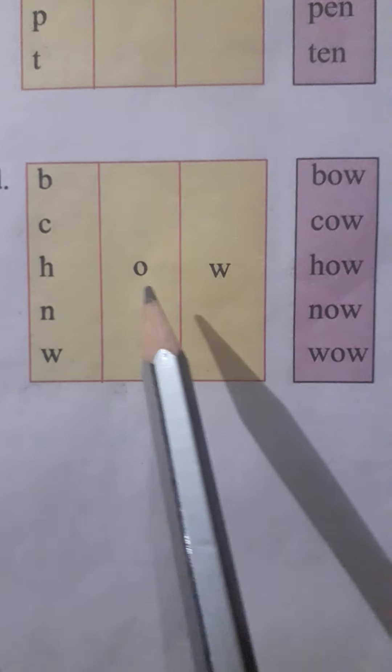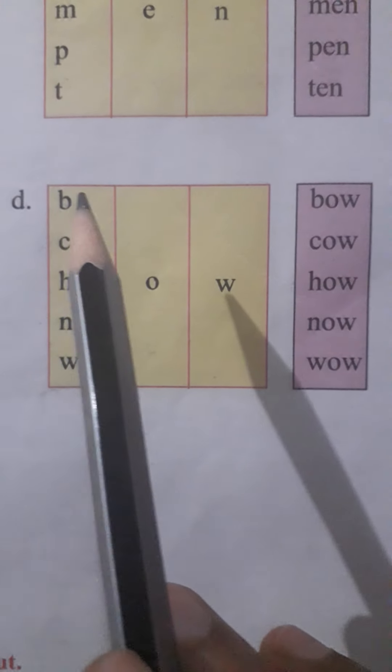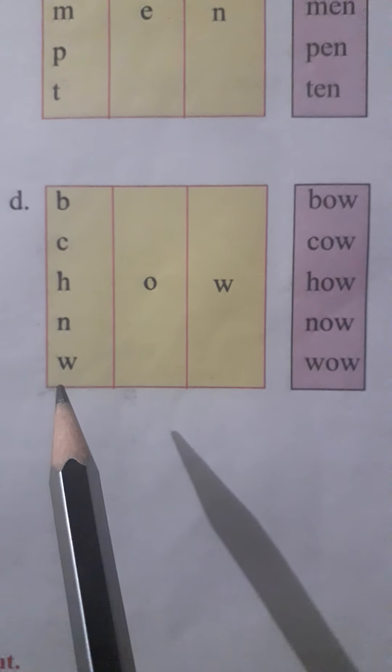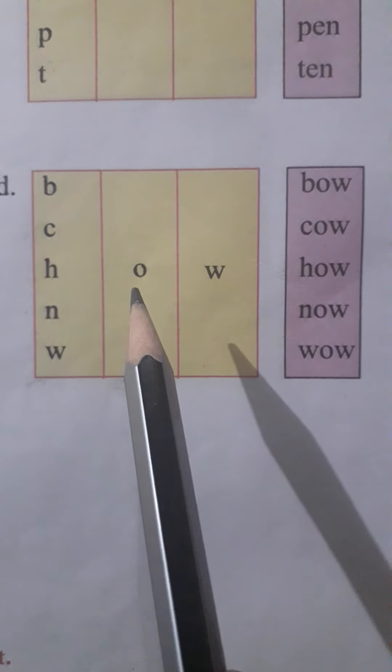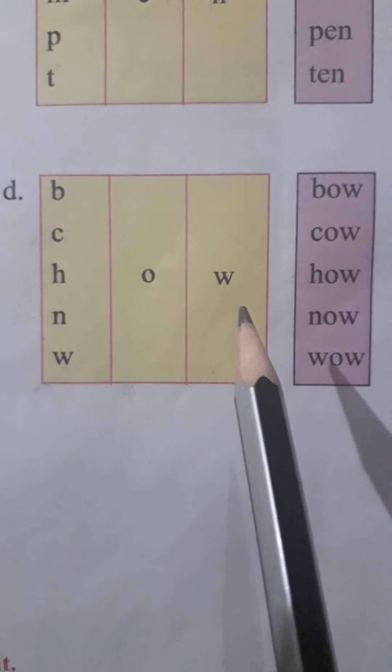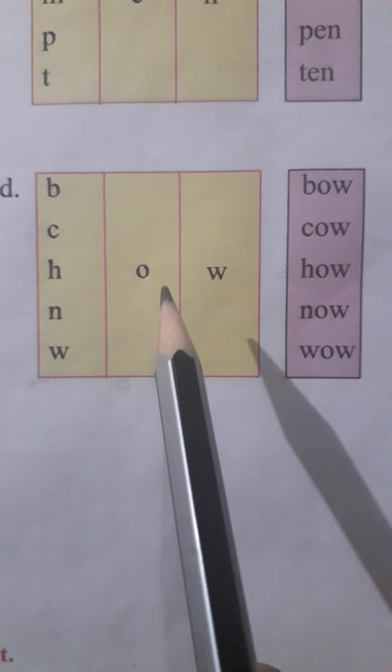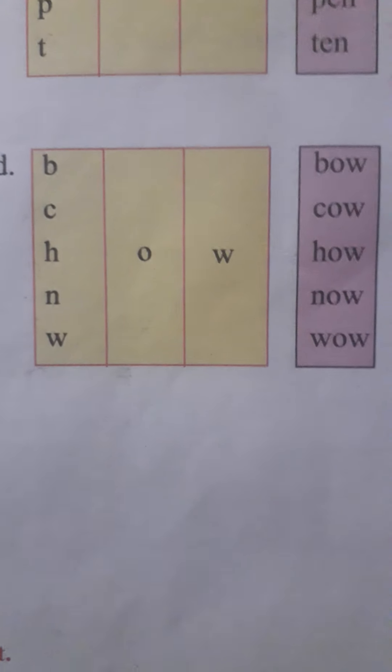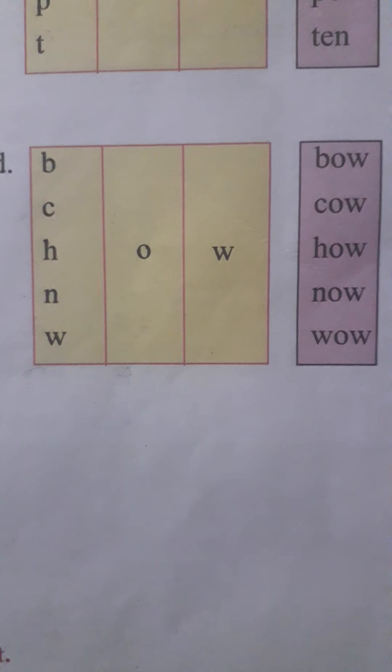W-O-W wow! This is the simplest method. What to do? Take one letter from here, then take the next letter, and afterward the last letter, and make words like this. Let's learn the next chart.